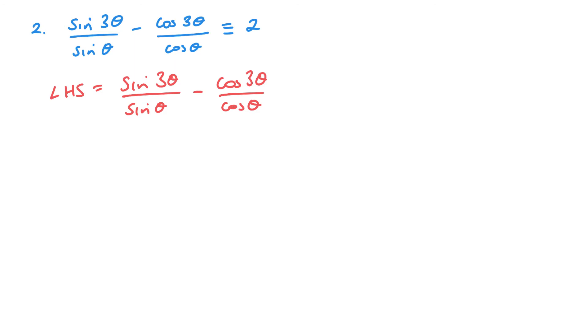And then all I want in that top bit is a sine theta which will cancel with this bottom sine theta, and a cos theta which will cancel with this bottom cos theta. Once I've got that, then I should be able to get it in this form.